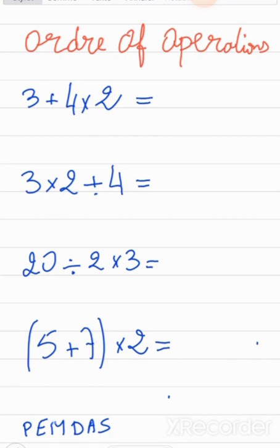The M and D stand at the same rank. And A and S — addition and subtraction — stand at the lower rank. So P is stronger than E, and so on. Here we have addition and multiplication.